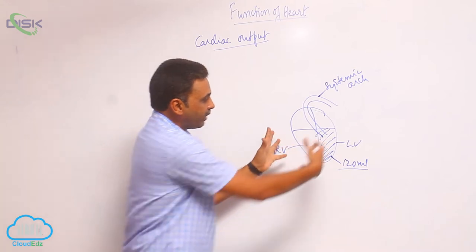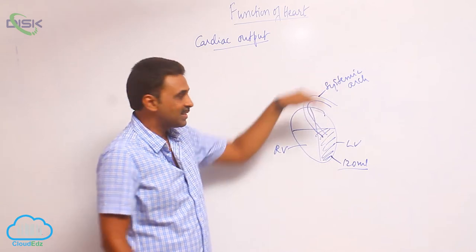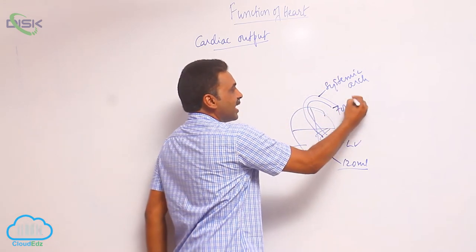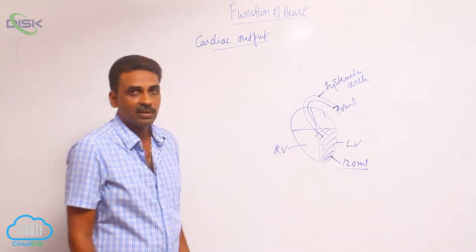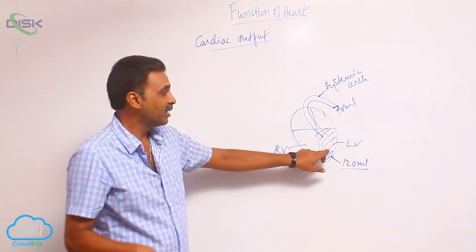When ventricles have contracted, out of 120 ml, 70 ml has entered into the systemic arch. That means still some 50 ml is left behind inside the ventricles.